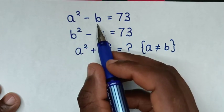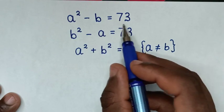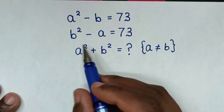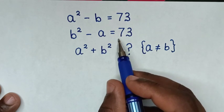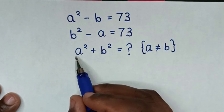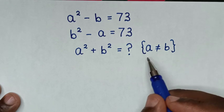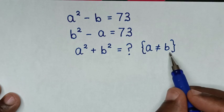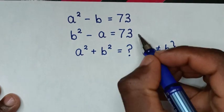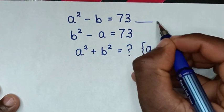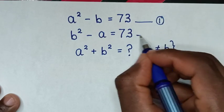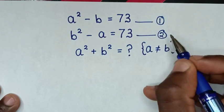How to solve: A squared minus B is equal to 73 (equation 1), and B squared minus A is equal to 73 (equation 2). To find the value of A squared plus B squared, such that A is not equal to B.